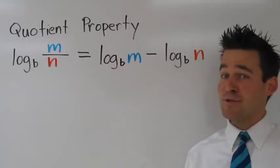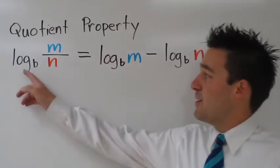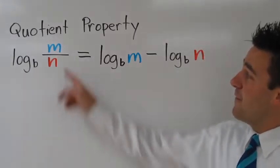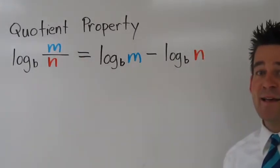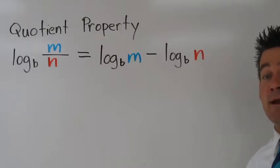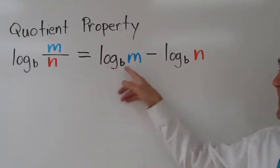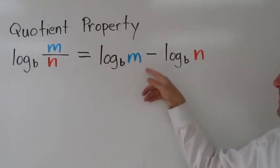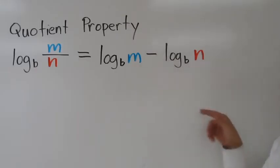This is the quotient property. If we have log base b of m divided by n, this can be rewritten as log base b of m minus log base b of n.